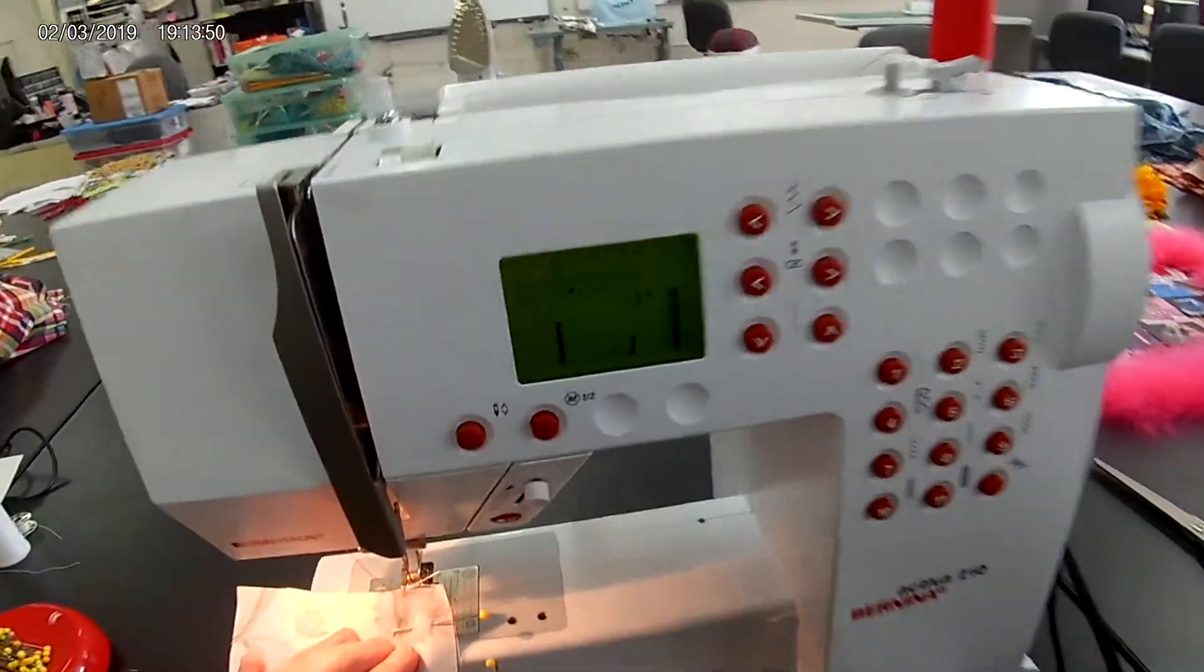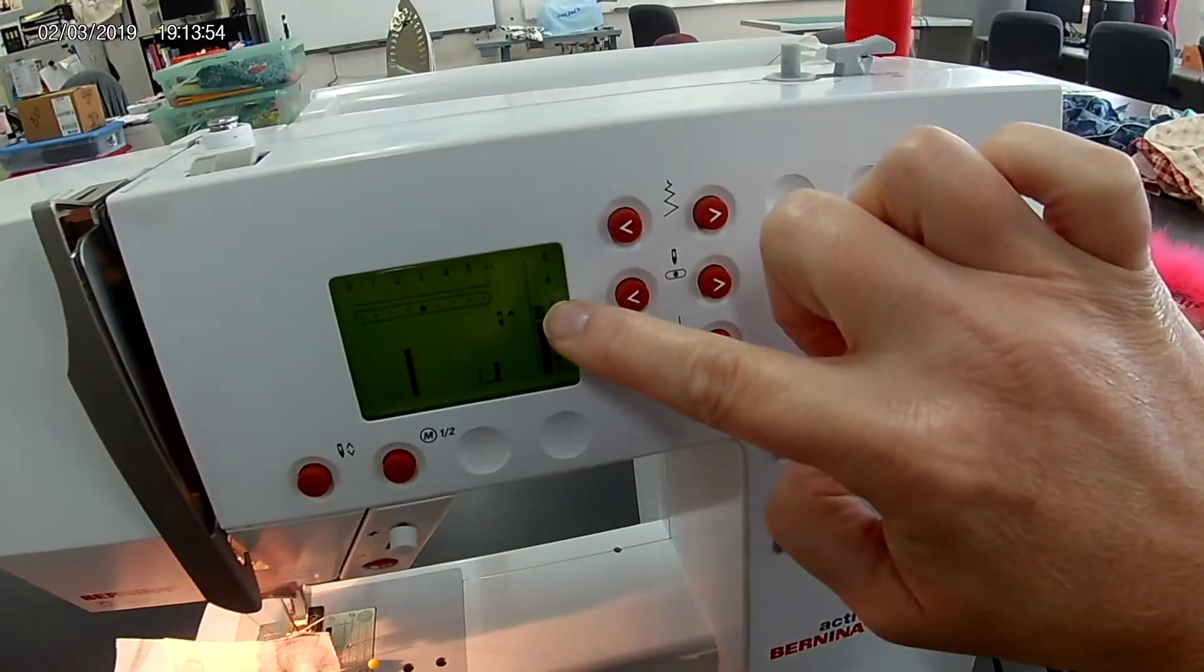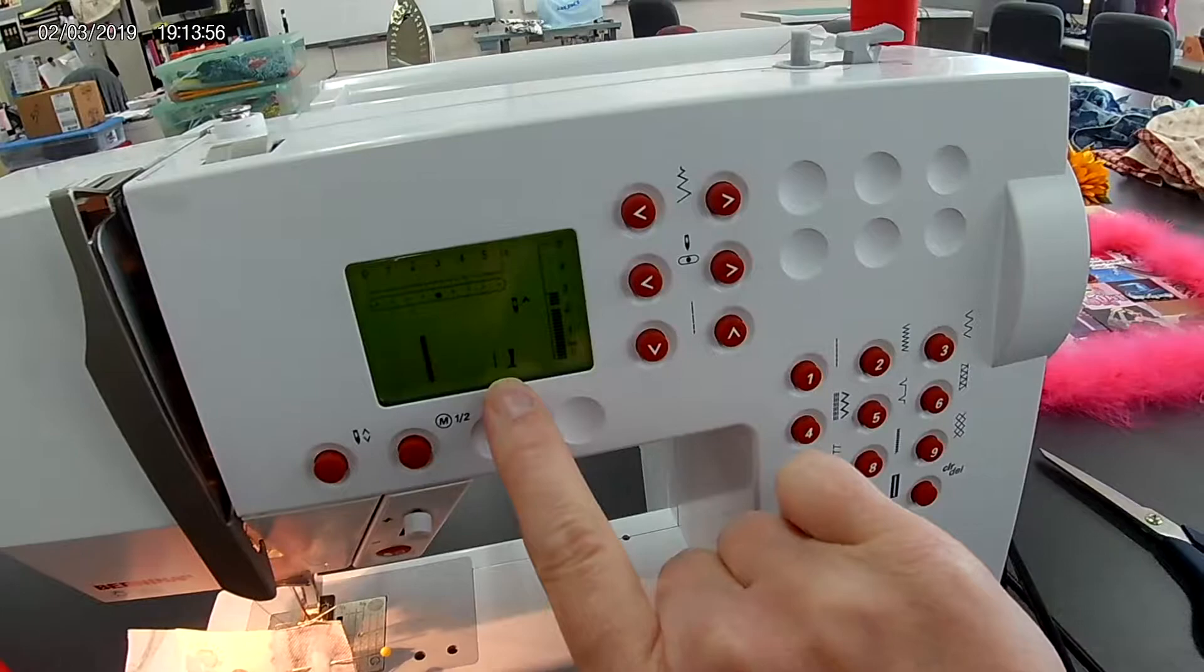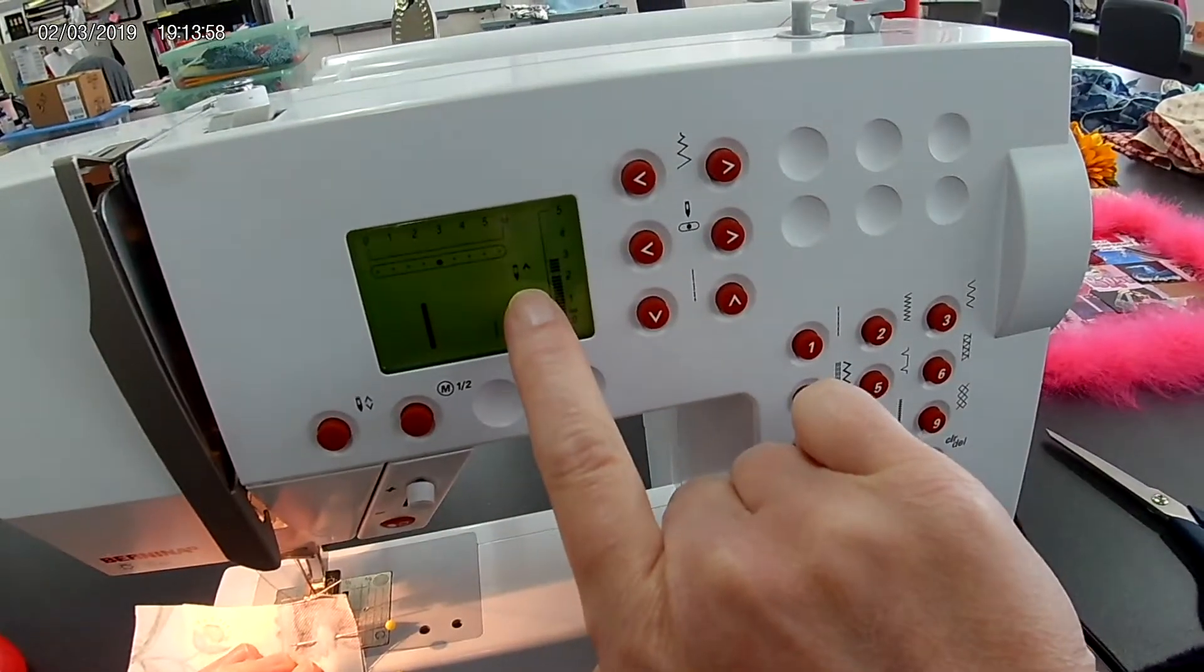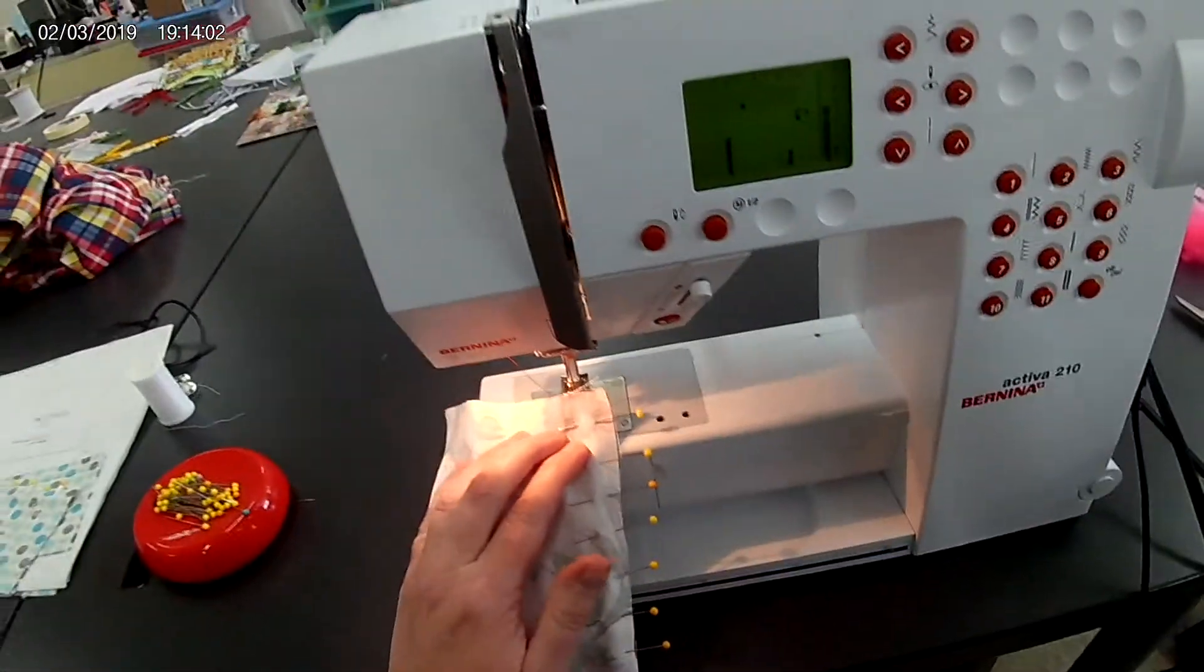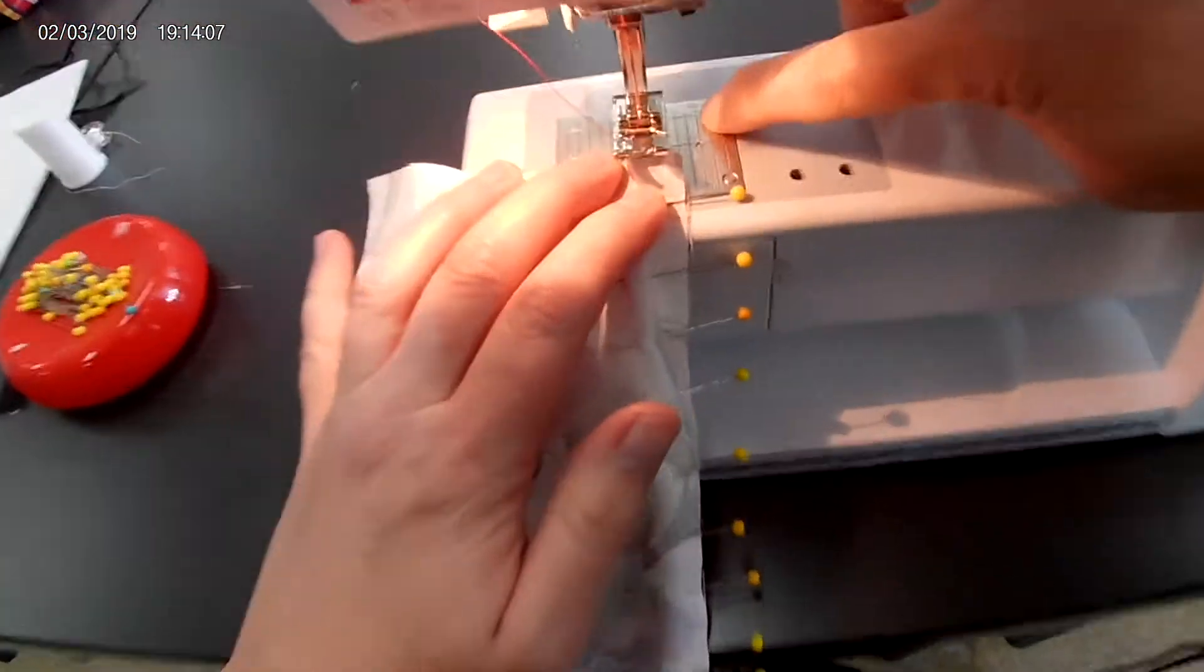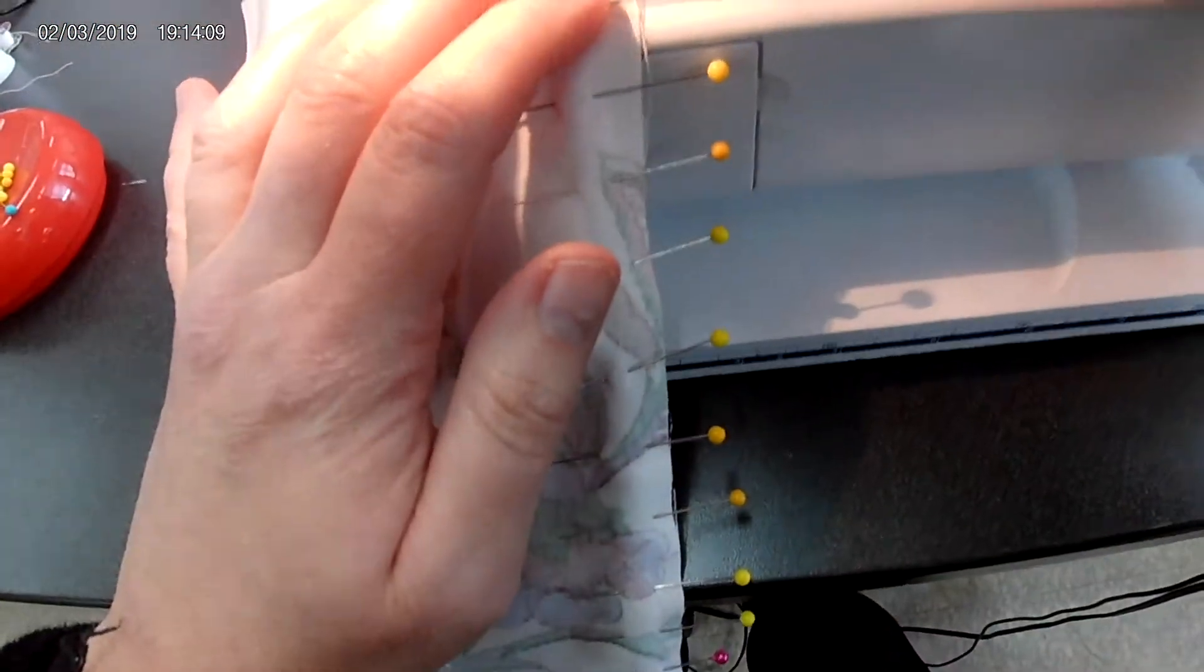Note the computer screen on the sewing machine. I am at a stitch length 3, using the number 1 presser foot. My needle is positioned so that it will end up in the air as I stitch. I'm going to use the 5/8 inch seam allowance, which is right there.